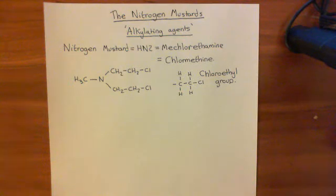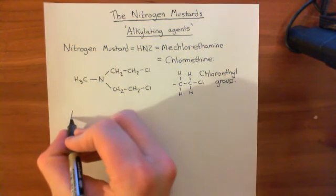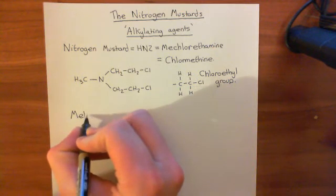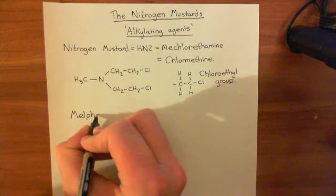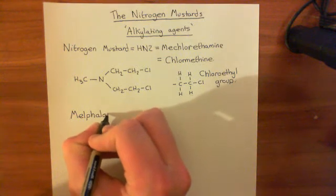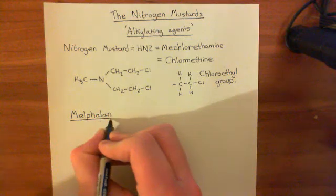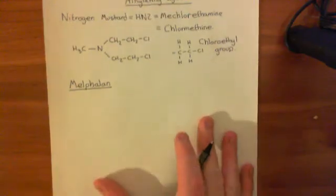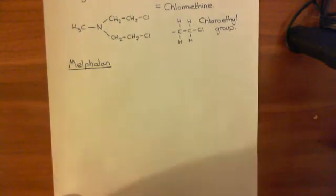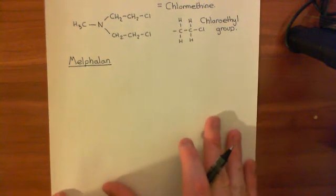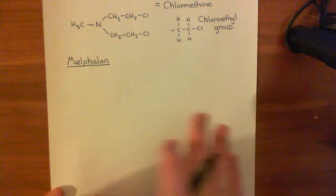So that's our first example of a nitrogen mustard drug. We're now going to look at another example. The next example we're going to look at is melphalan, which is a drug specifically used to treat melanomas. And I'll explain why it's so useful in treating melanomas in a moment.